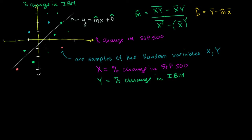Now if we keep doing this — in theory, if we did it forever — there's some theoretical line that is the true regression line. If we were to sample an infinite number of samples, maybe the true regression line looks different from our estimate. There's some true regression line for those two random variables.